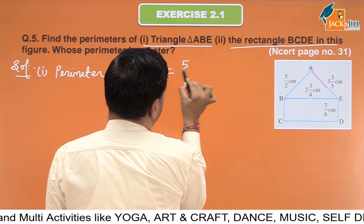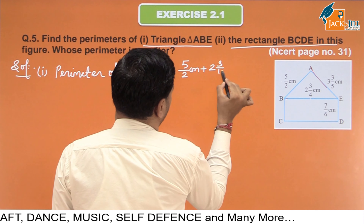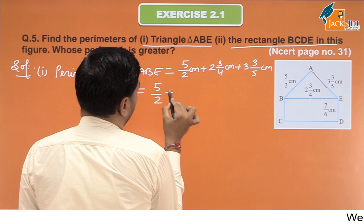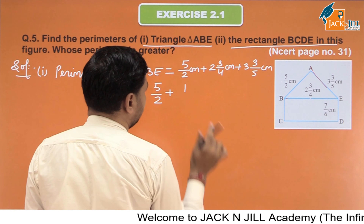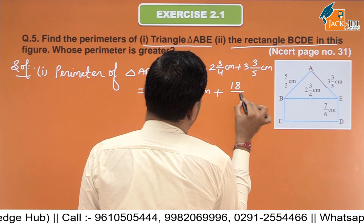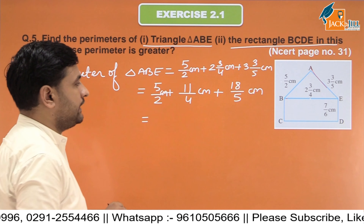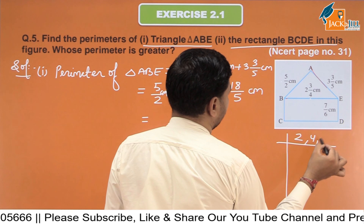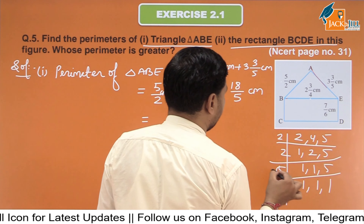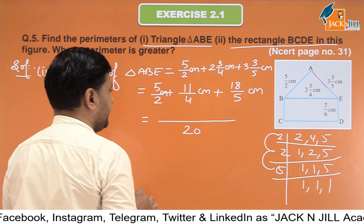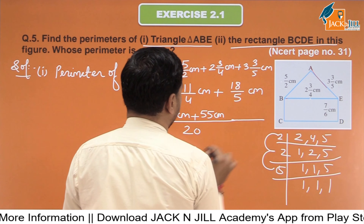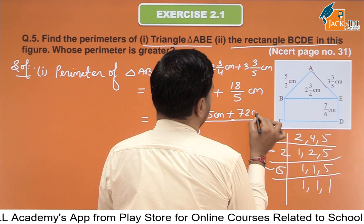Side AB is 5/2, side BC is 2 and 3/4 — which gives 11/4 centimeter — and the third side is 3 and 3/5 — which gives 18/5 centimeter. Now we find the LCM of 2, 4, and 5. From the table of 2: 5 times 2 is 10, 10 times 2 is 20. In the table of 2, 20 comes 10 times: 10 times 5 is 50. In the table of 4, it comes 5 times: 5 times 11 is 55. In the table of 5, it comes 4 times: 4 times 18 is 72. So the LCM is 20.